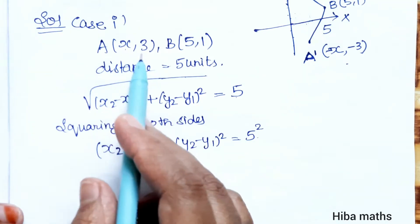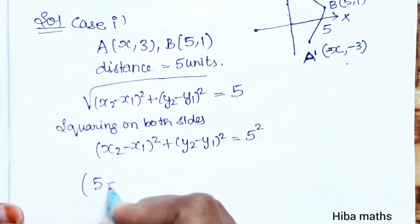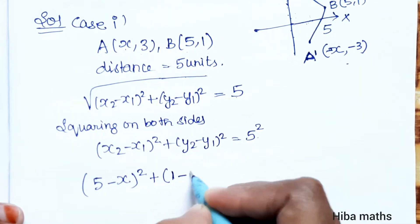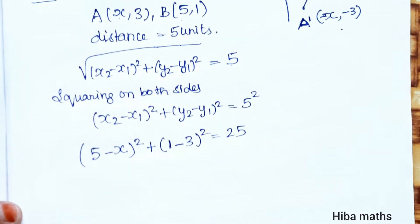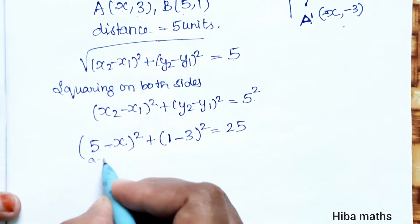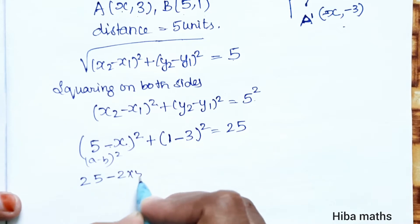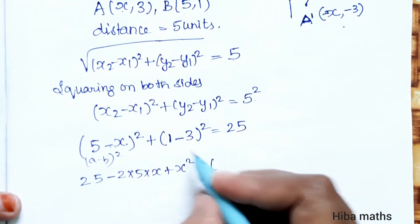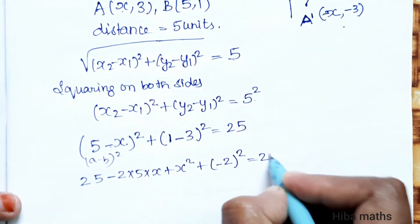Now substituting x1, x2, y1, y2: (x minus 5) whole square plus (3 minus 1) whole square equals 25. Expanding using the (a minus b) whole square formula: a squared minus 2ab plus b squared. So: x squared minus 10x plus 25, plus (1 minus 3), that is (minus 2) whole square, equals 25.